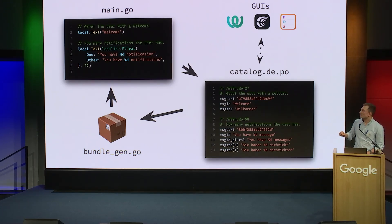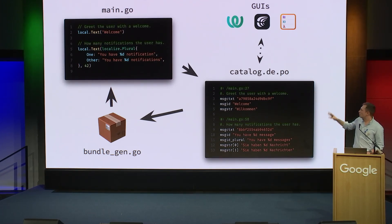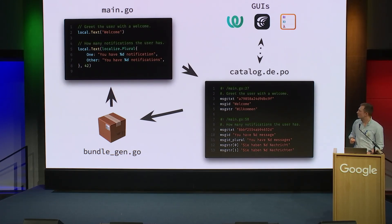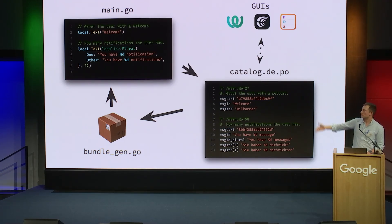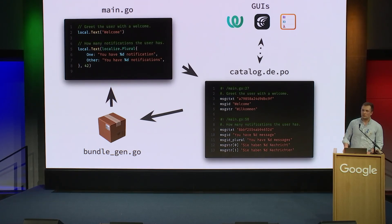What it did, though, is you define texts by calling specific methods on the localizer, and then the Localize extraction tool would gather those messages and produce so-called PO files. PO files are a very old standard from the GNU gettext set of tools. It would produce the bundle, which is Go code, which feeds right into your application and provides translations. You can also use any kind of GUI like PoEdit or WebLate to work with your translation files.